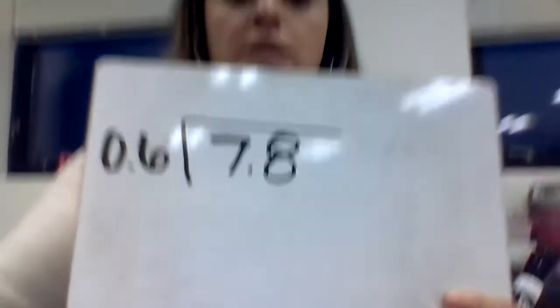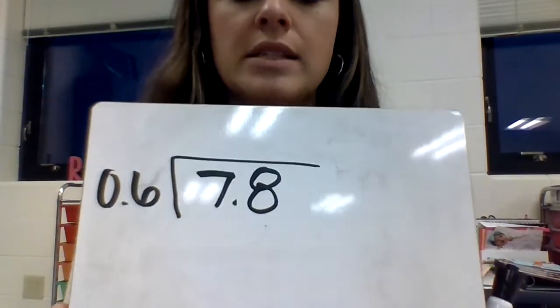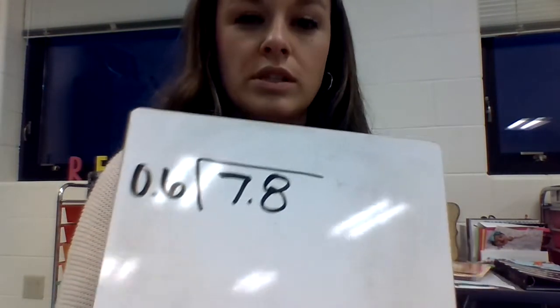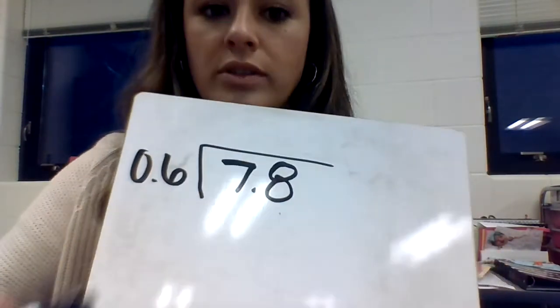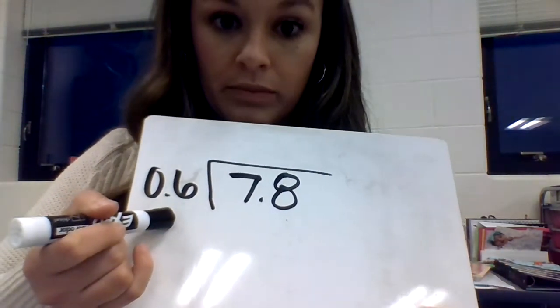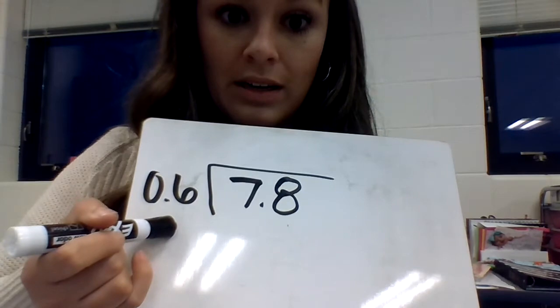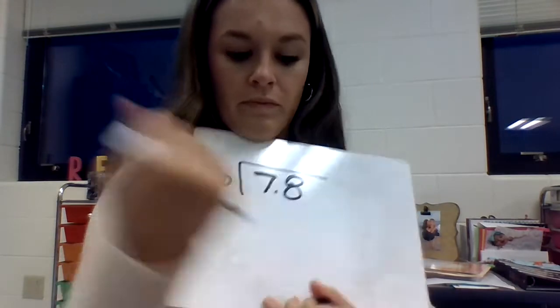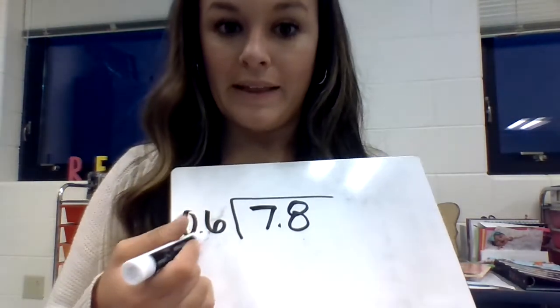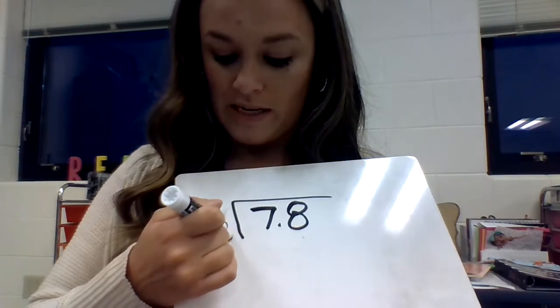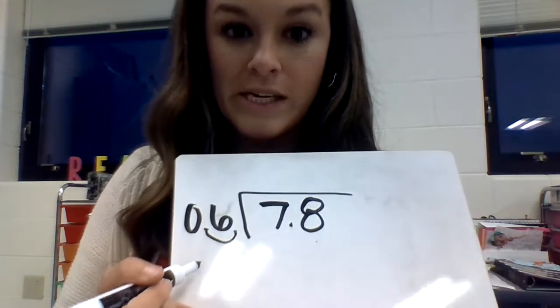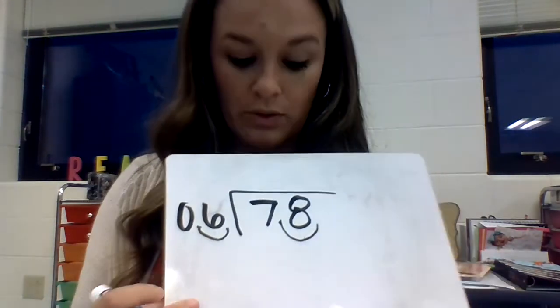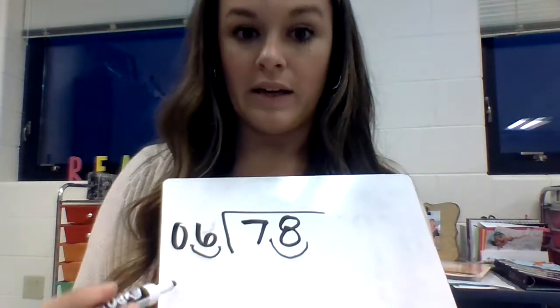The first one we are going to do is 7.8 divided by 0.6. This is the important part. You have to make your divisor, the number on the outside, a whole number. Since there is one number behind the decimal, that means we need to move the decimal over once. If we move the decimal over once here, we also have to move it over once here. So now it says 78 divided by 6.